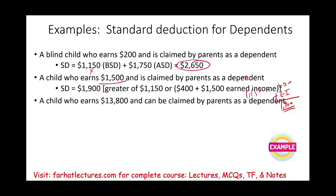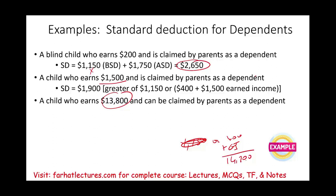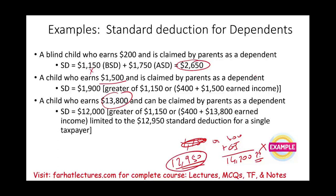Example three: a child earns $13,800 and is claimed as a dependent. Comparing $1,150 versus $400 + $13,800 = $14,200 — the earned income formula is clearly larger. However, $14,200 exceeds the standard deduction cap of $12,950 for single filers in 2022. Therefore, their standard deduction is capped at $12,950. The numbers change year to year, but the concept stays the same.